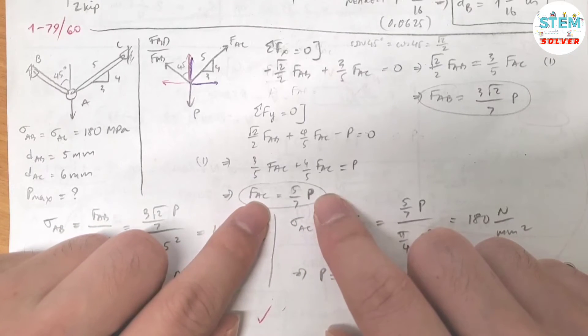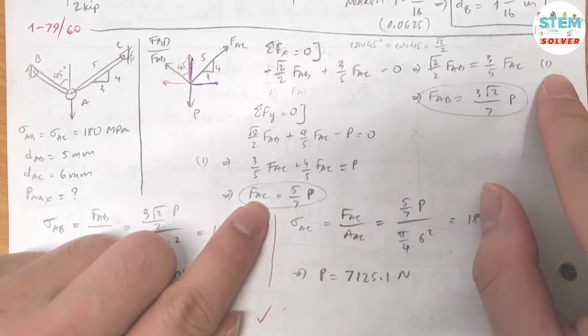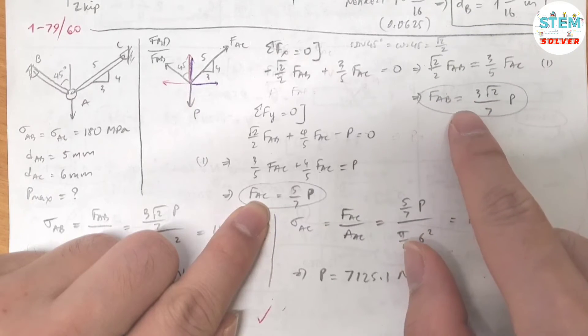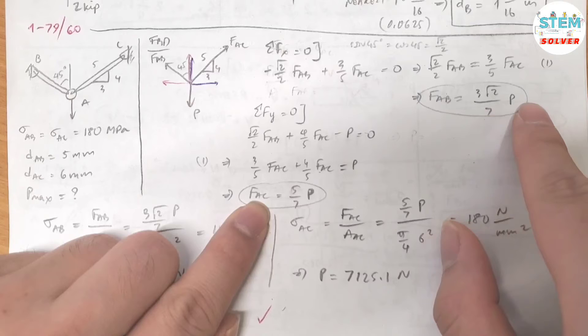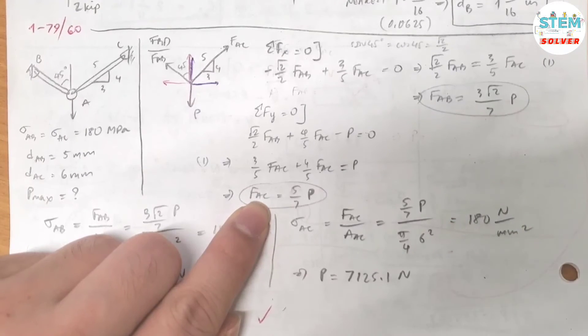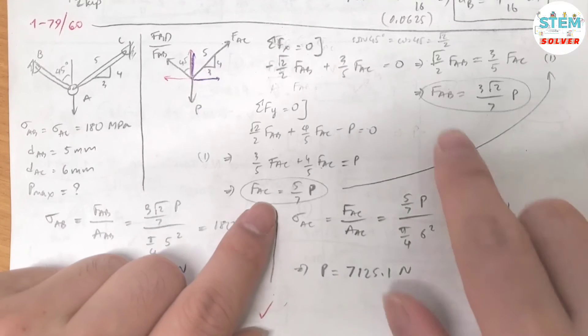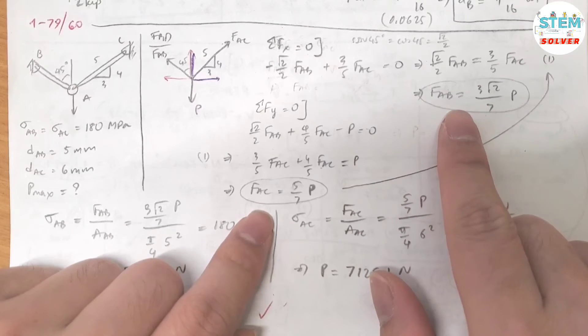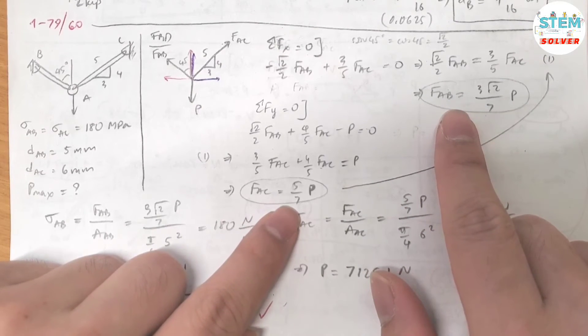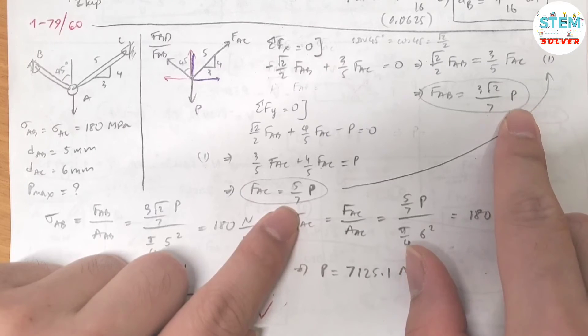Since I know FAC, I can use this to plug back in here. So it would give me FAB equals 3 square root of 2 over 7 P. We both have FAB and FAC expressed in terms of the unknown P.